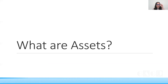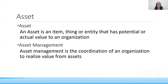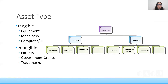What are assets? An asset is nothing but an item, thing, or entity that has a potential value and adds value to the organization. Asset management is a system which helps the organization have an overview of all the assets within it. Assets are classified into two types: tangible and intangible. Tangible assets have a physical value, whereas intangible assets have value but in an indirect way.